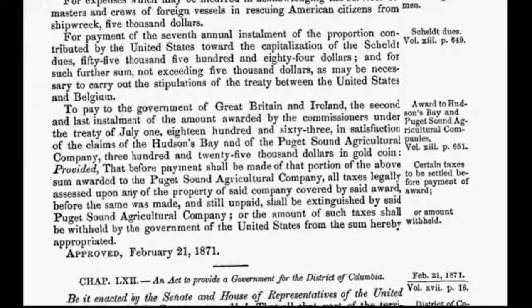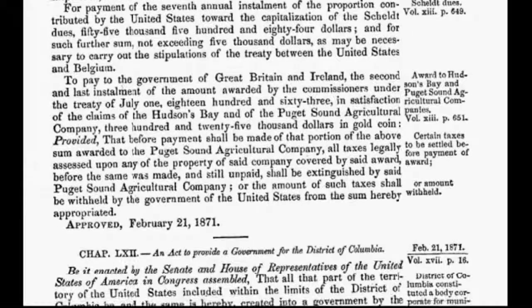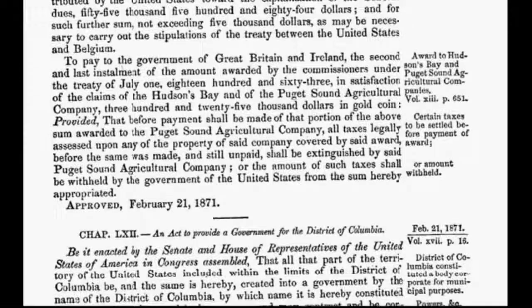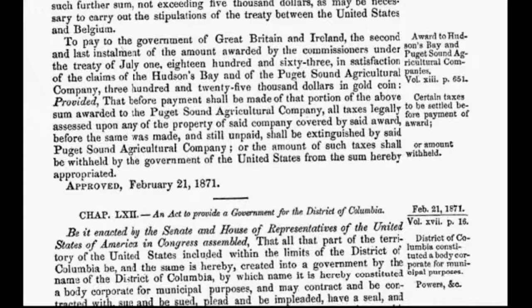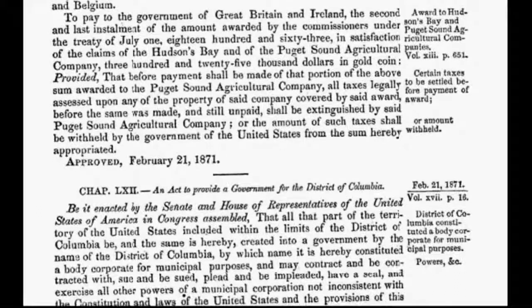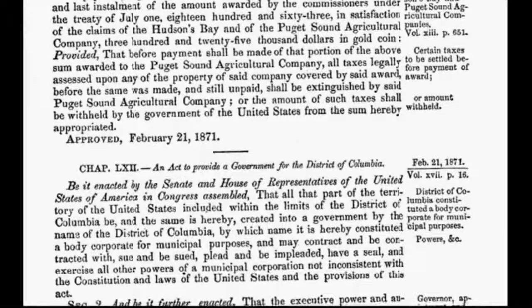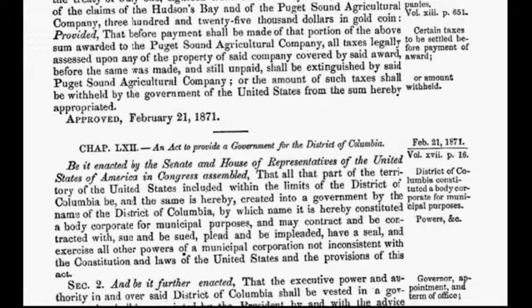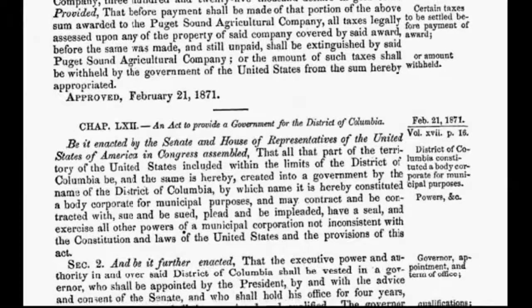With no constitutional authority to do so, Congress creates a separate form of government for the District of Columbia, a 10-mile square parcel of land. The act was passed when the country was weakened and financially depleted in the aftermath of the Civil War. It was at that time a strategic move by foreign interest international bankers who were intent upon gaining a stranglehold on the coffers and neck of America.